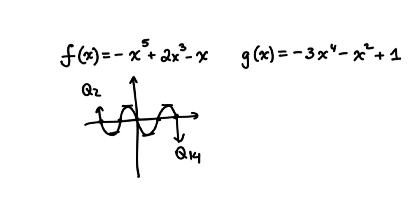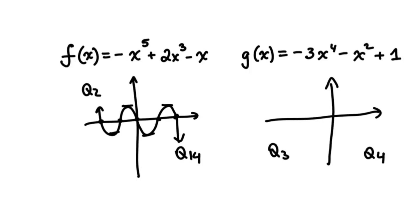When the leading coefficient of an even degree function is negative, the function follows the end behavior of a parabola that opens down. It starts in quadrant 3 and ends in quadrant 4. In this case, we'll have a maximum of 4 x-intercepts and 3 turns. The function starts in quadrant 3 and ends in quadrant 4.